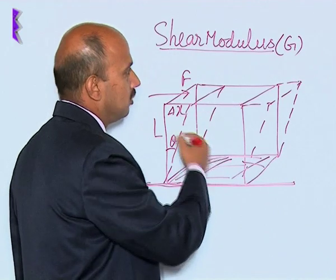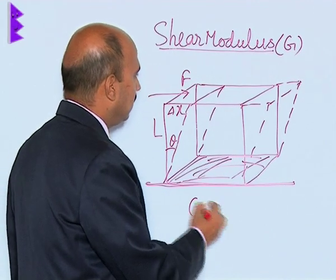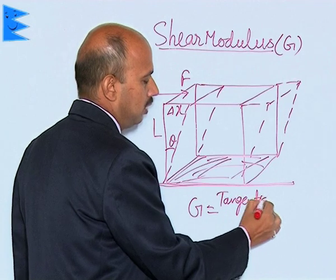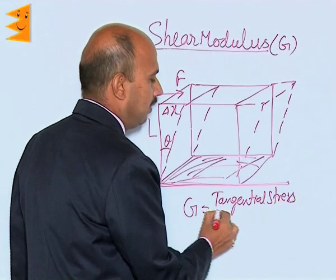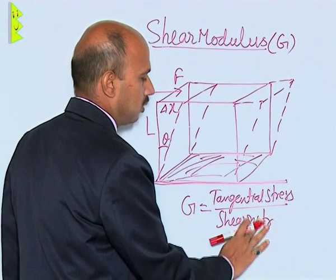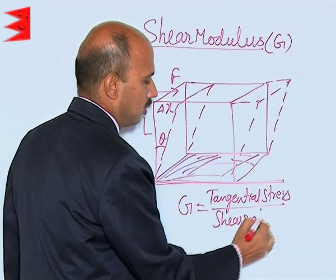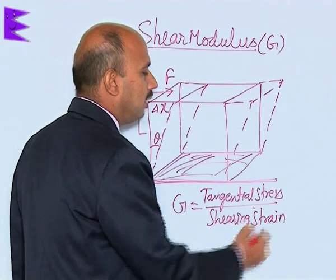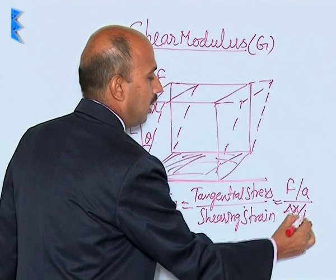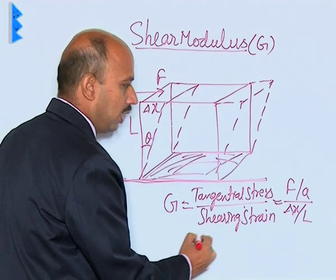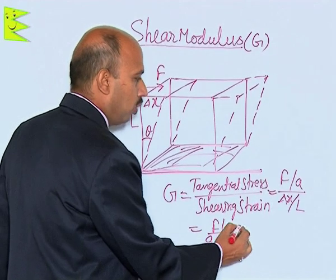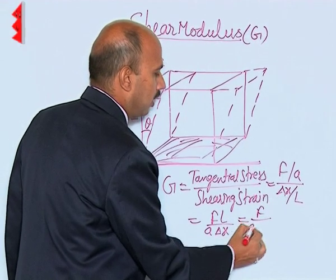In that case, we can write shear modulus, or modulus of rigidity, G, as equal to tangential stress divided by shearing strain. That gives us G = (F/A) divided by (delta x / L), which can also be written as F·L / (A · delta x), or equivalently F / (A · tan θ).